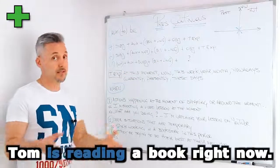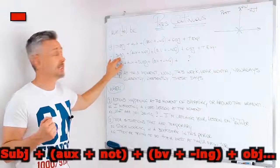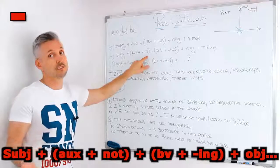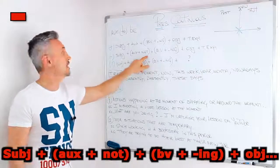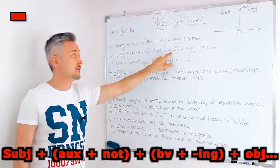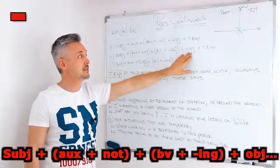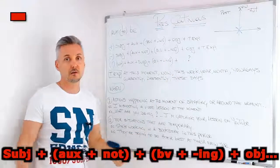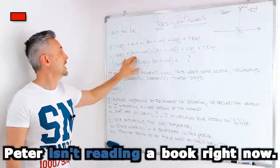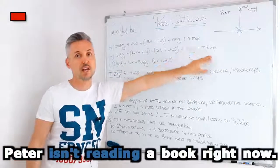Now, for the same sentence but in a negative form, we need the subject, then the auxiliary plus 'not' because it's negative, then the base of the verb plus the -ing form, then the object, and then a time expression if you like. For example: Peter isn't reading a book right now.